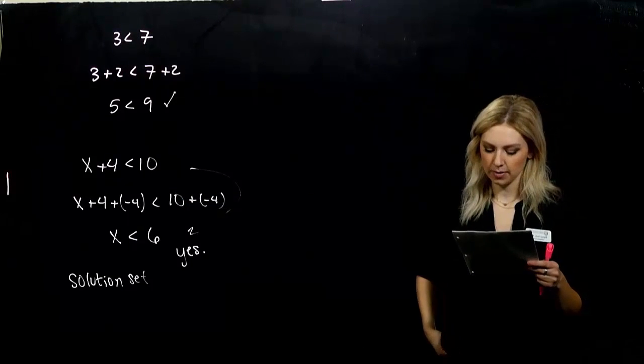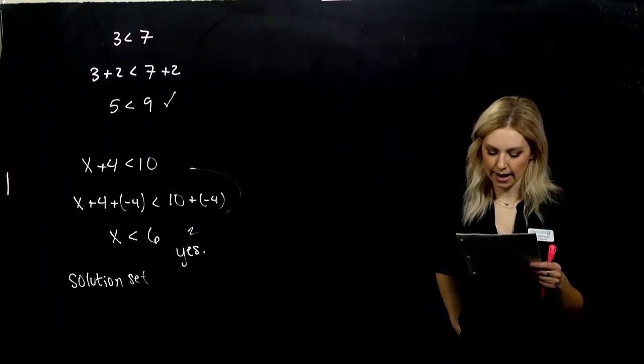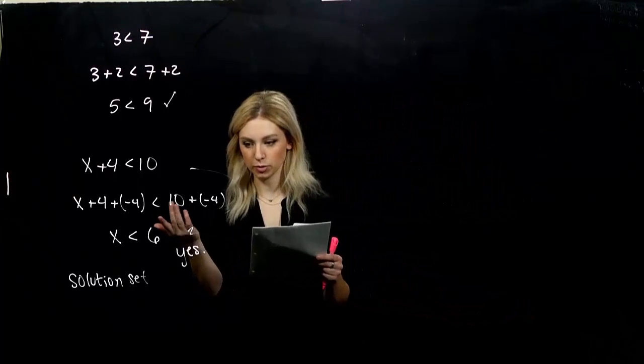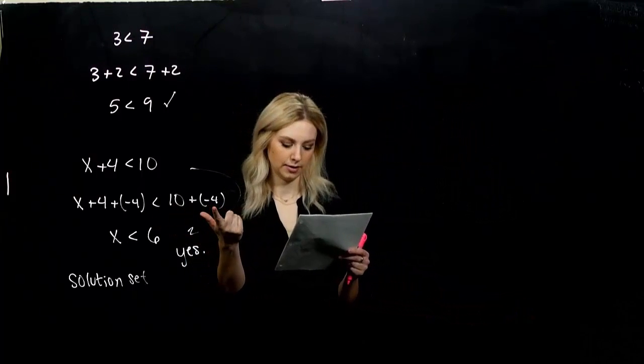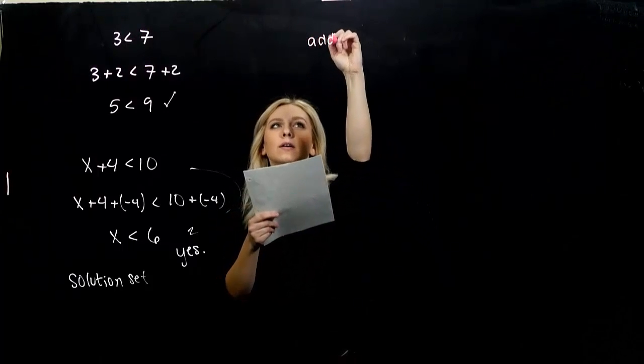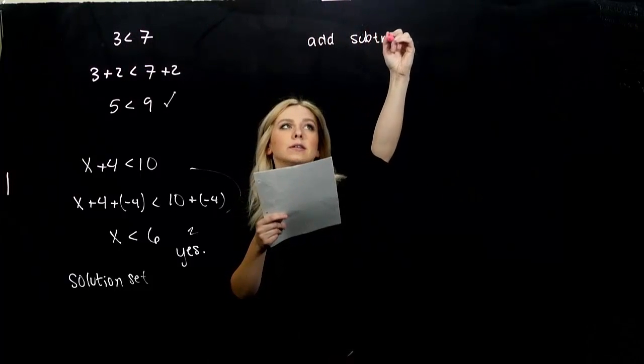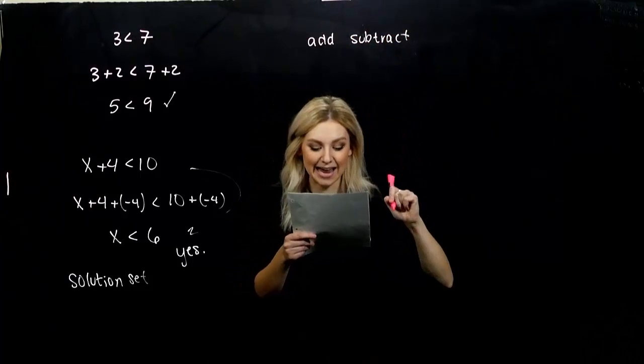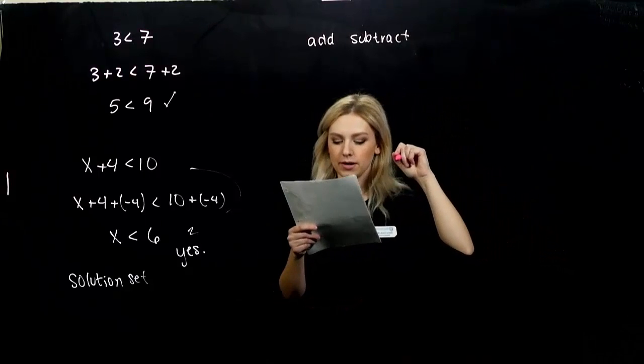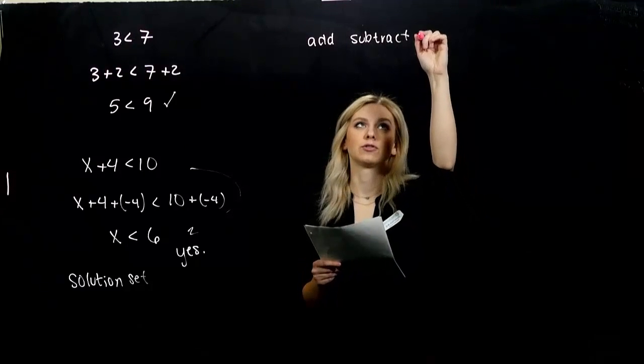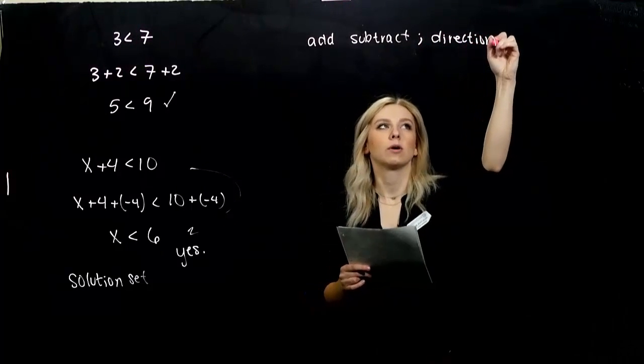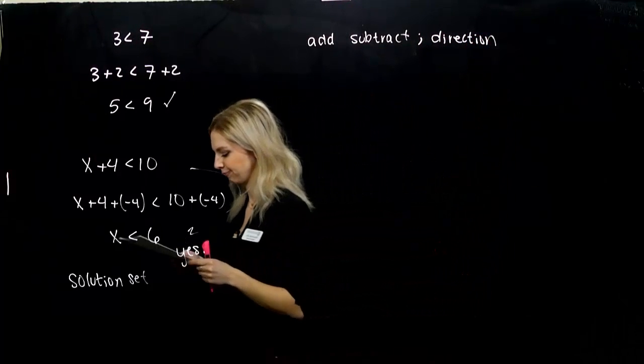So to say that x plus 4 is less than 10 and x less than 6 are equivalent is to say that they have the same solution set. So if I can plug in the same values, anything less than 6 into this one and into that one, it's still going to hold true. Those two are equivalent. So for any real numbers A, B, and C, we can add the same thing to both sides of any inequality involved or subtract since we can add a negative. When we add or subtract the same number on both sides of an inequality, the direction of the inequality symbol is not changed. It still holds true. The direction of the inequality is unchanged.